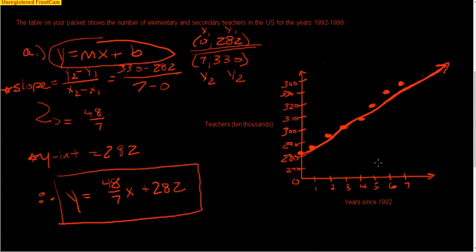We want the number of teachers in 2006. Well, this is 1992, 93, 94, 95, 96, 97, 98, 99. What I would do then is extend this graph out. And I would add on, this is 8, this is 9, this is 10. That would represent 2002. I would keep going until I get to 2006. I would keep this straight line going. I would go up from 2006 and over and have a value over here that would match up.